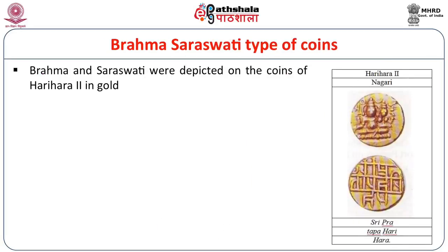Another important coin type issued by Vijayanagara rulers is the Brahma Saraswati type. Brahma and Saraswati were depicted on the coins of Harihara II in gold. On these coins, Saraswati is shown holding a Veena, seated on a high pedestal, and the Nandhinagari script is found on the reverse.